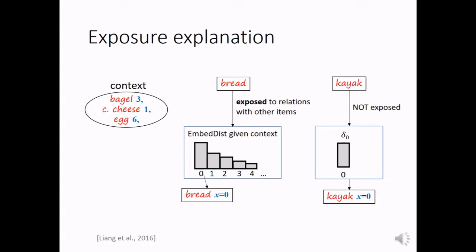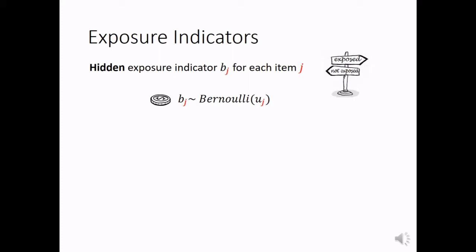But the question is, how can we decide whether an item is exposed or not? We use exposure indicators. For each item j, we use one exposure indicator bj, sampled from a Bernoulli distribution with probability uj. We cannot observe these exposure indicators, so they are hidden variables.